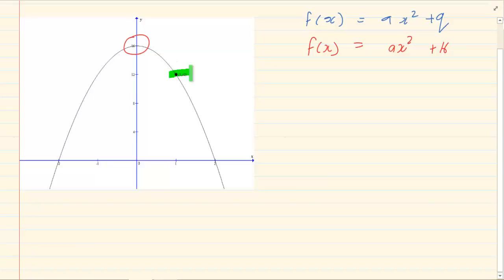Then we are going to substitute any other random point. So the random point we have is 1 and 12, y is 12, x is 1. So we have a is equal to 12 minus 16 which is equal to minus 4. Now how am I doing this? This is your solve for x.